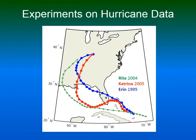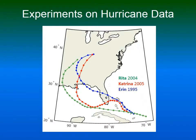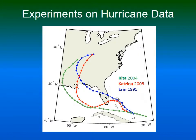Second, the order of similarity changes. Taking the geographic context into account, Katrina and Rita are more similar than Erin and Rita, and vice versa otherwise. In both cases, taking the geographic context into account better reflects the development of the hurricanes, as was confirmed by an expert on hurricanes.